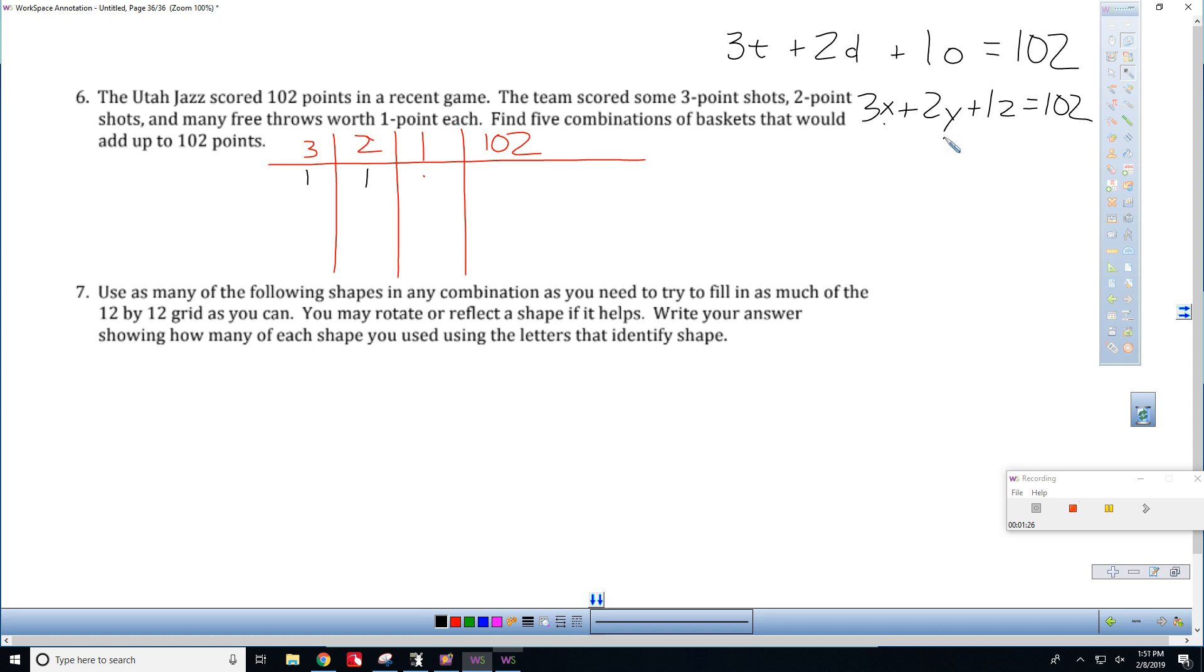Can I score one three-pointer? Of course. Can I score one two-pointer? I mean we probably scored a lot more than that, but maybe that's all we scored. So if we did that, that would be five points. Well, how many points are left? 102 minus five, well that's 97. That means we made 97 free throws.